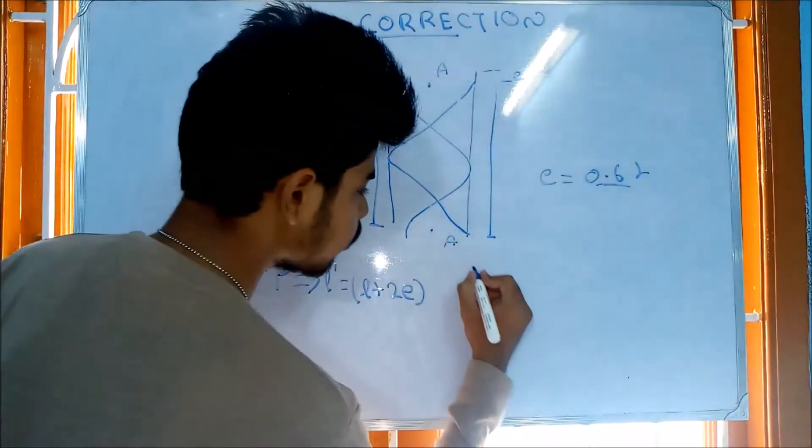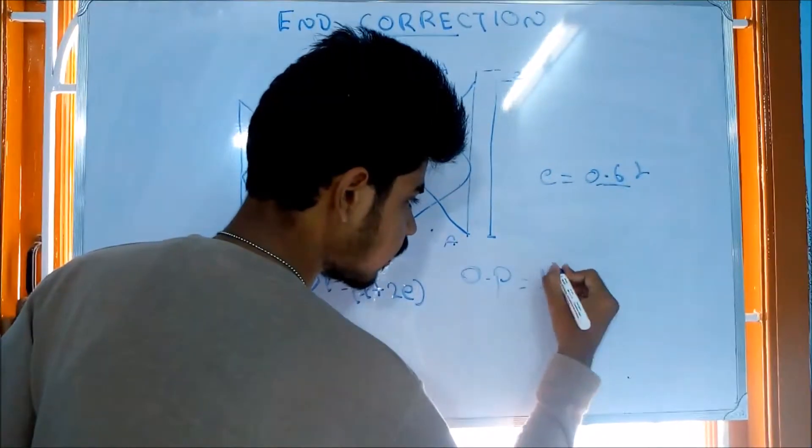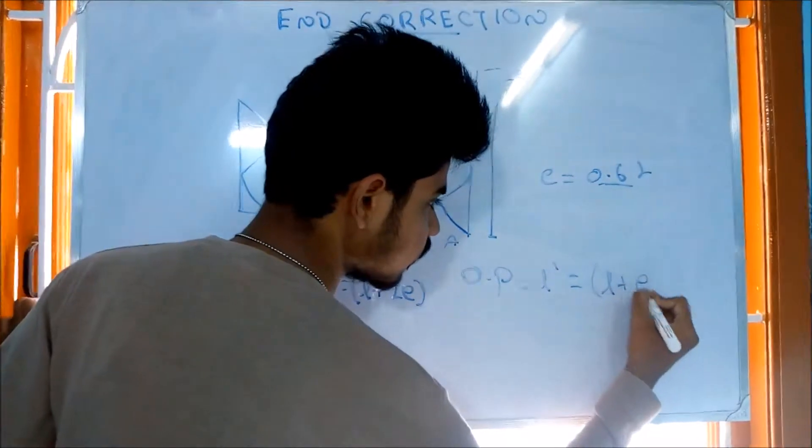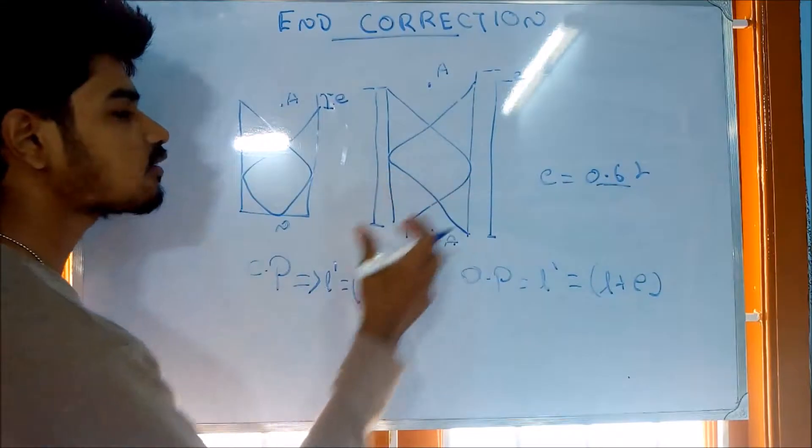Same, if open pipe is the length of the pipe, L prime is equal to L plus E. E is 0.6R. So R is the radius of the wire.